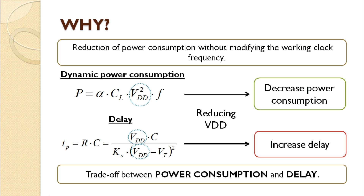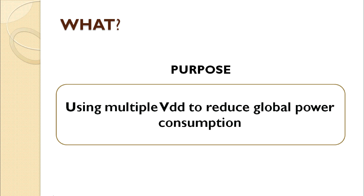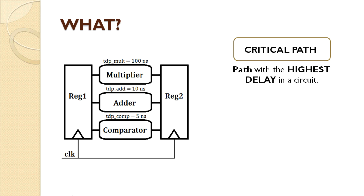Based on all these concepts, the purpose of this work is reducing the VDD voltage to decrease the global power consumption in the circuit. For that, multiple VDD voltages will be employed in order to decrease the supply voltage in some parts of the circuit, and consequently reducing the power consumption of the complete circuit. To carry out the technique of multiple VDD, first we should consider the concept of critical path. It is defined as the path with the highest delay in a circuit.